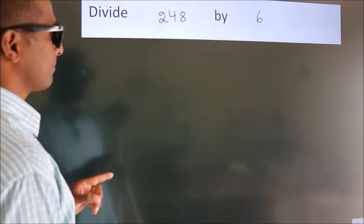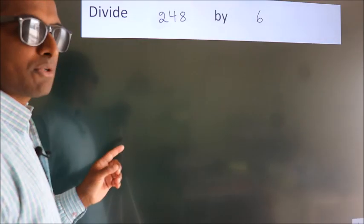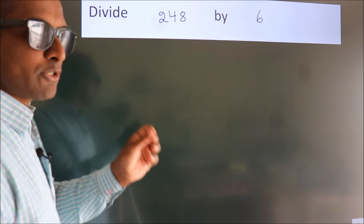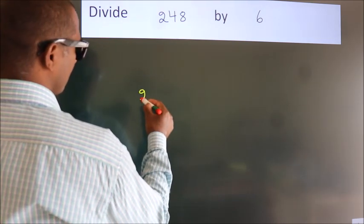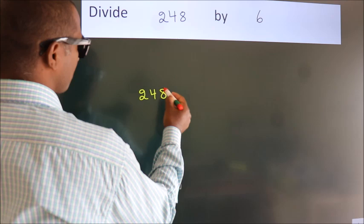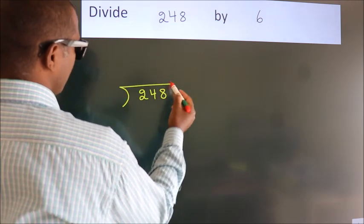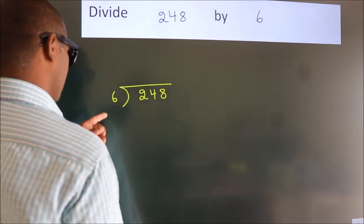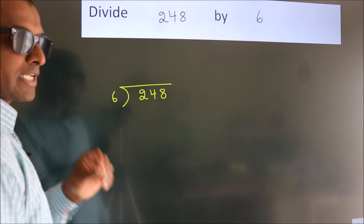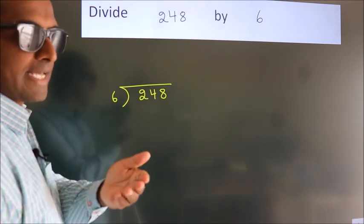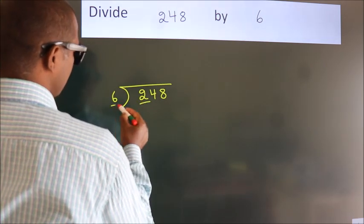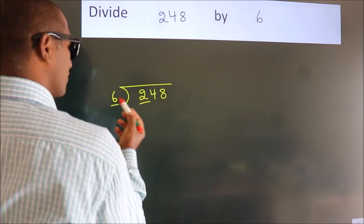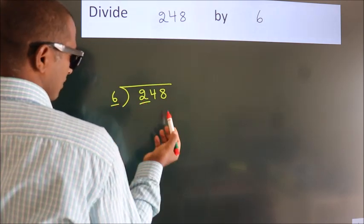Divide 248 by 6. To do this division, we should frame it in this way: 248 here, 6 here. This is your step one. Next, we have 2 here. 2 is smaller than 6, so we...